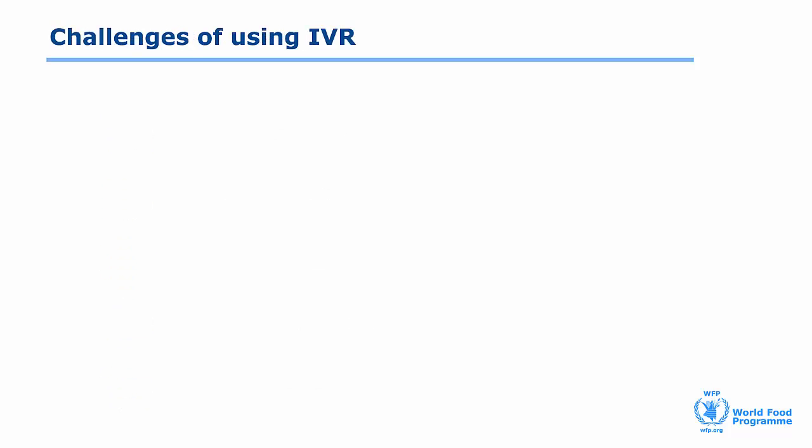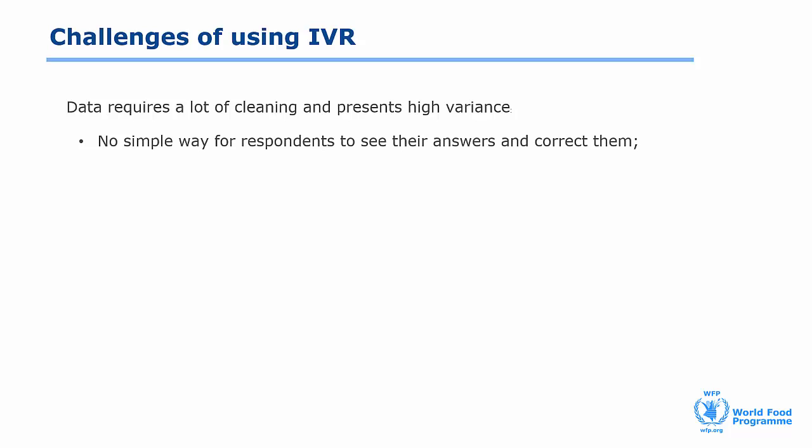Using IVR also has some challenges. When we deployed IVR surveys during the Ebola crisis, we noticed that the data collected through IVR requires a lot of cleaning and presents high variance. For example, if a respondent makes a mistake keying in the answer on the phone's keypad, there's no simple way for them to see their answer and correct it. The only way around this is asking them to confirm their answer after every response, which would make the call really long. In contrast, when using SMS, people can easily review their answer before sending it.